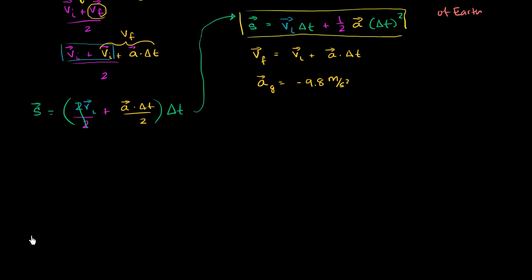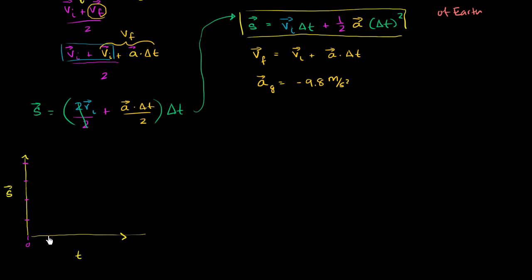The first graph will be displacement versus time. The horizontal axis is time and the vertical axis is displacement. I'll put markers at 5, 10, 15, and 20 meters on the displacement axis, and 0, 1, 2, 3, and 4 seconds on the time axis. So this is in seconds and this is in meters — this is my displacement graph.